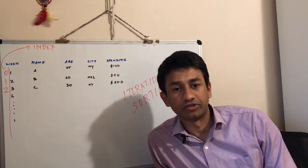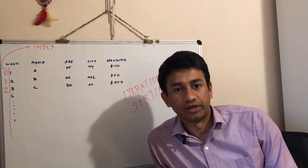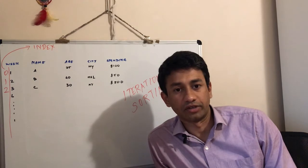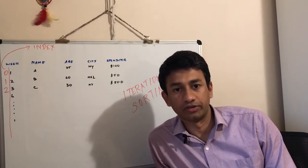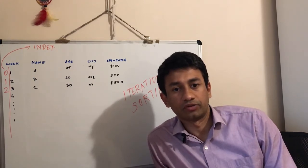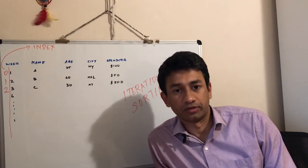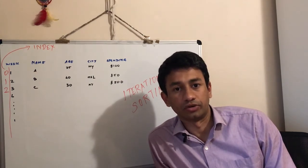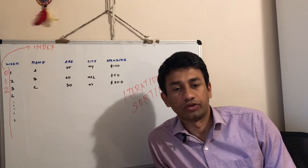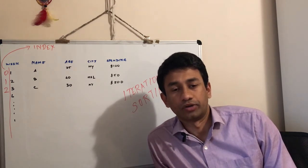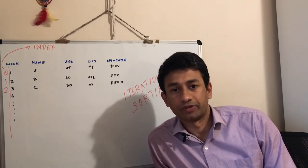Hi everyone, this is Sharon. Welcome to my channel. This series is about learning data science in 100 days. The fact for today is about 90% of Earth's population lives in the northern hemisphere, whereas the northern hemisphere constitutes about 67% of the total land area. So that's the fact for today.